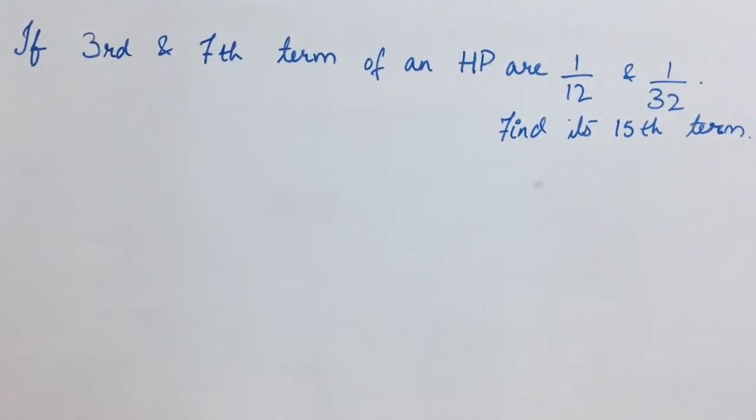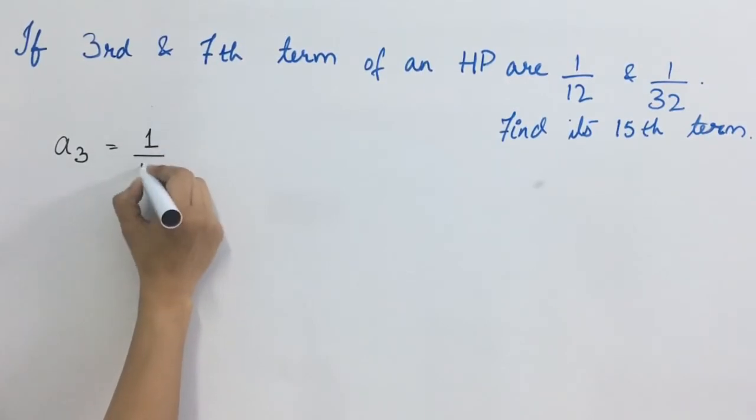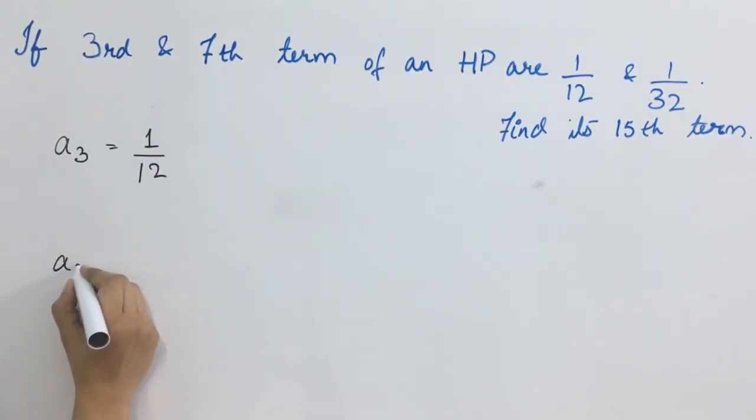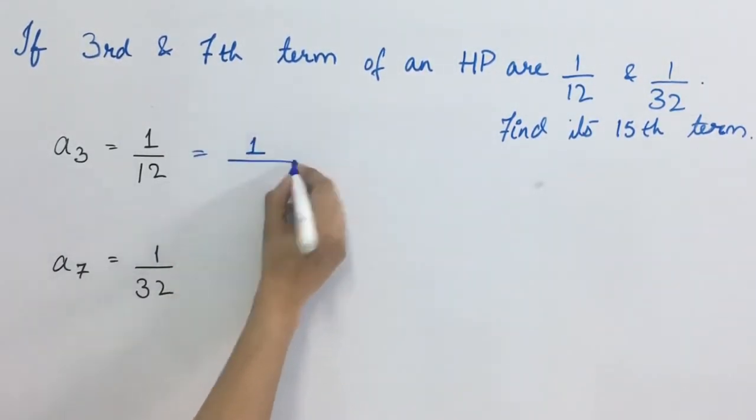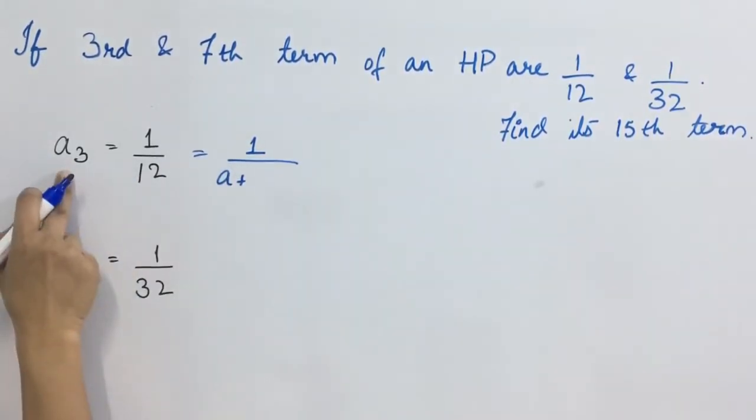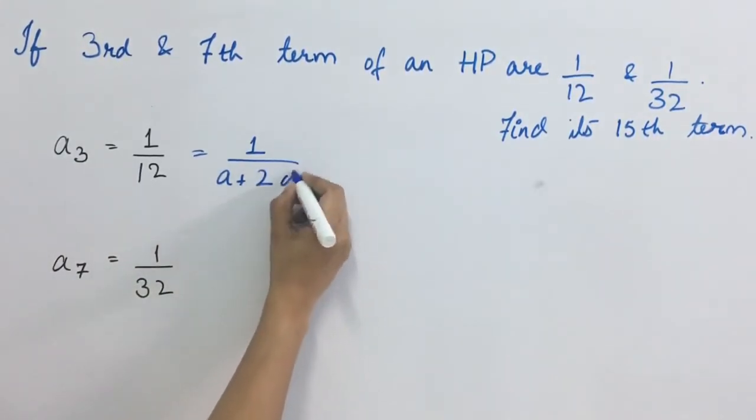Next question we have. If 3rd and 7th term of an HP are 1 by 12 and 1 by 32, find its 15th term. What we have here? A3 is equal to 1 upon 12. A7 is equal to 1 upon 32. A3 is equal to 1 upon A plus N minus 1 into D. What is N here? 3. So 3 minus 1 is 2D.